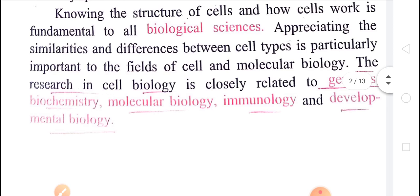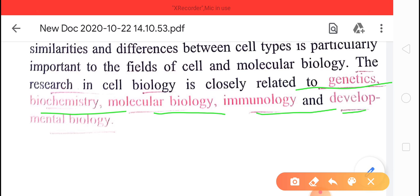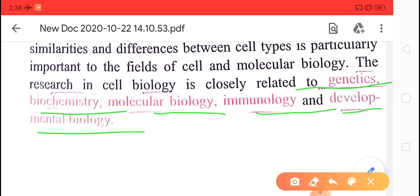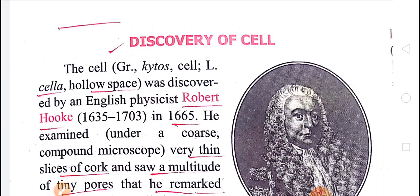The research in cell biology is closely related to genetics, biochemistry, molecular biology, immunology, and developmental biology. These are various branches of biology that cell biology is closely related to. Now in cell biology, first of all we will start the study of the discovery of cell.